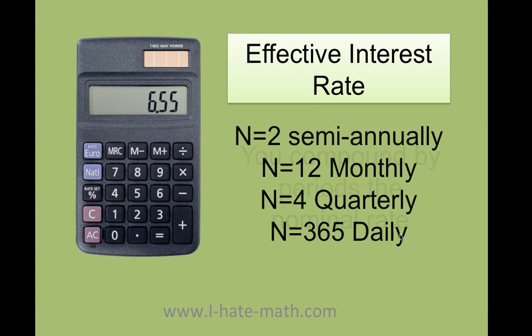It is very important that you remember that when you're compounding semiannually, you're going to have two periods. Monthly, you have 12 periods. Quarterly, 4 periods, and this is per year. And daily, you're literally doing it 365 periods.